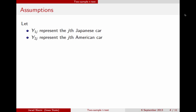Before we get into the assumptions, I want to bring in some notation. The subscript 1 represents the Japanese cars, and 2 represents the American cars. j represents each individual car in those two groups. The assumption for the two-sample t-test is that the Japanese cars are independent and identically distributed from a normal distribution with a mean and a variance, and the American cars are IID from a normal distribution with a different mean but the same variance. The Japanese and American cars are also statistically independent from each other.